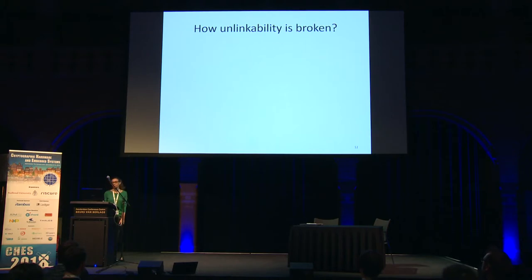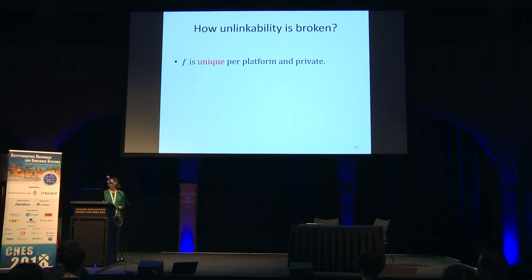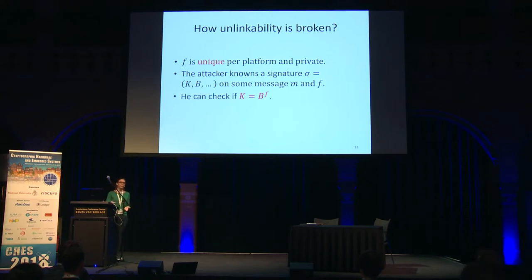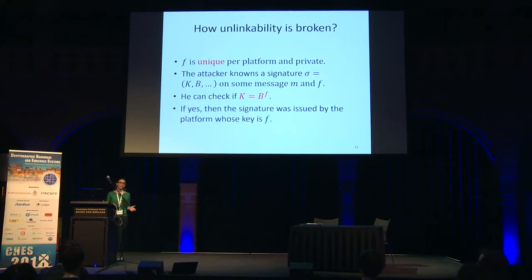How exactly is unlinkability broken? The secret key f is unique per platform and private. The attacker knows a signature sigma and, using the side-channel attack, recovers f. Since k and B are public, the attacker can verify whether k equals B^f. Given a list of signatures, the attacker can check which ones satisfy k = B^f, thus identifying which signatures were produced by a given platform — breaking unlinkability.